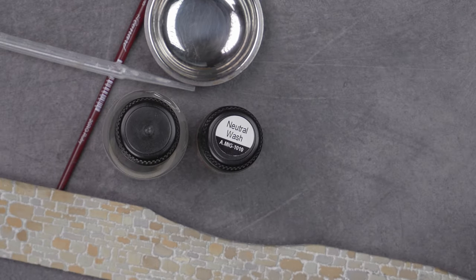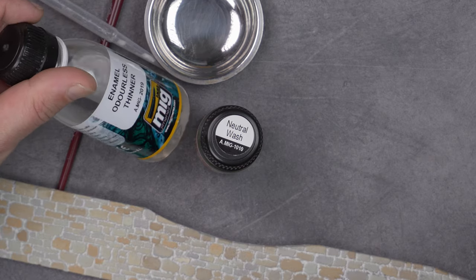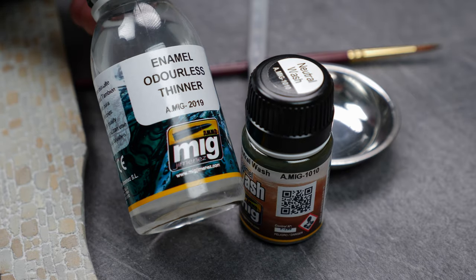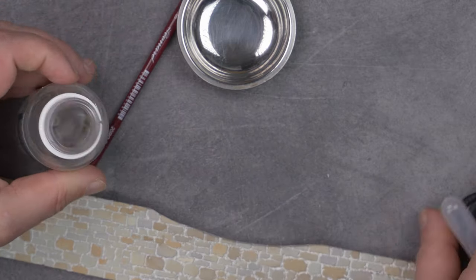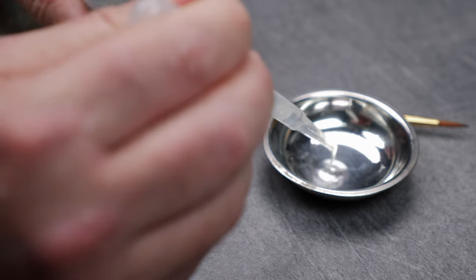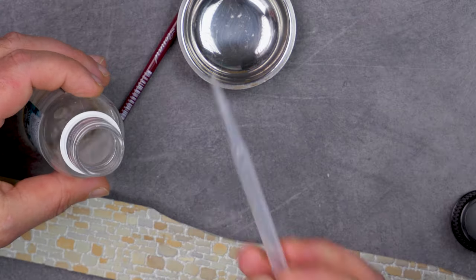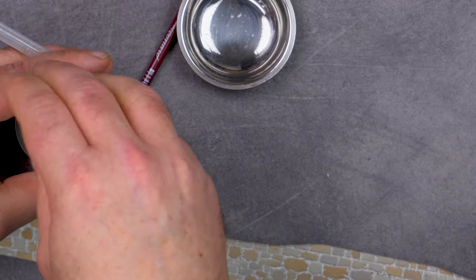First we start adding a little bit of odorless thinner into the cup with a pipette. Then we screw the lid back on, you know, just in case you throw the bottle off.